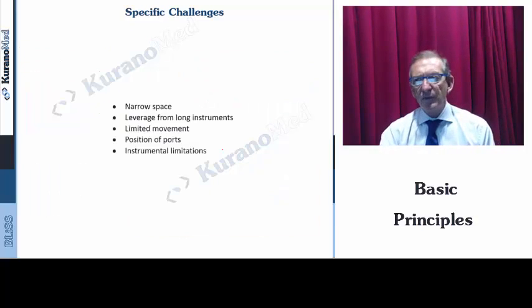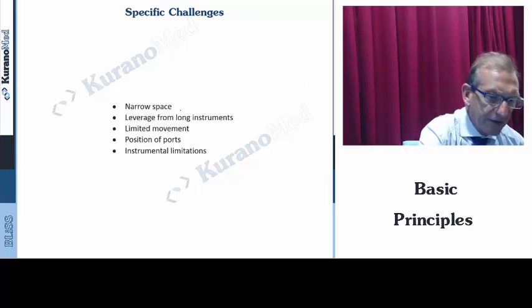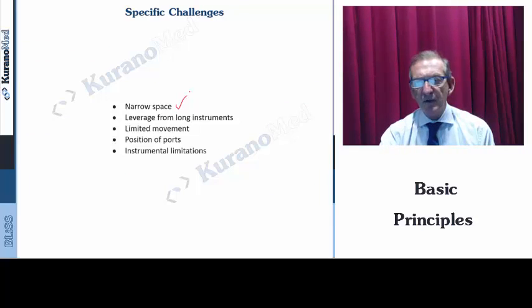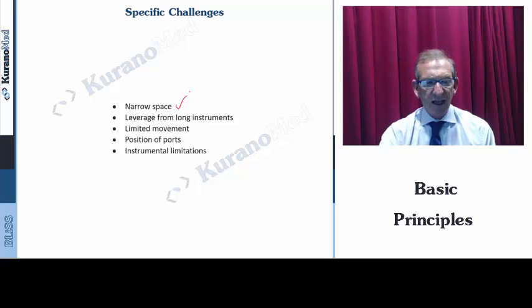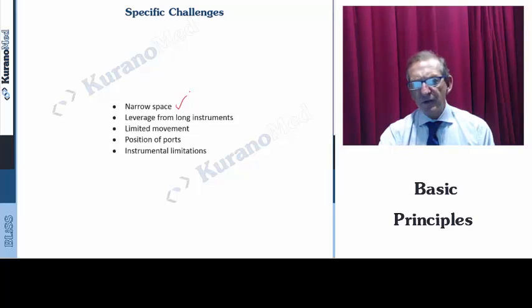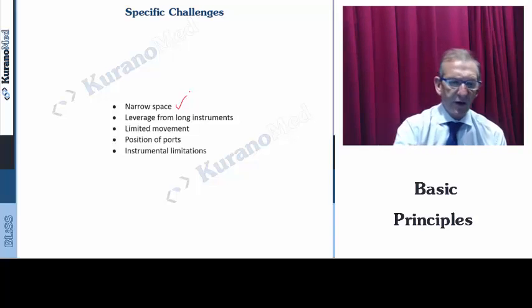The specific challenges of laparoscopic surgery are related to narrow spaces. We often work in very small spaces like the preperitoneal space, subfascial space, or the chest. The ribs and the space for inserting instruments reduce our instrument movement. The leverage from long instruments and the fulcrum effect limit movement. The position of the port and the type of instrument are important, and we must understand the limitations.